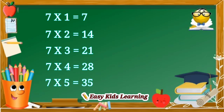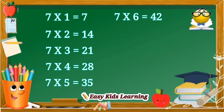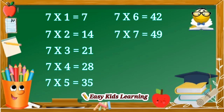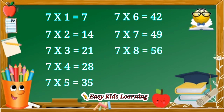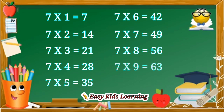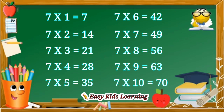7 fives are 35. 7 sixes are 42. 7 sevens are 49. 7 eights are 56. 7 nines are 63. 7 tens are 70.